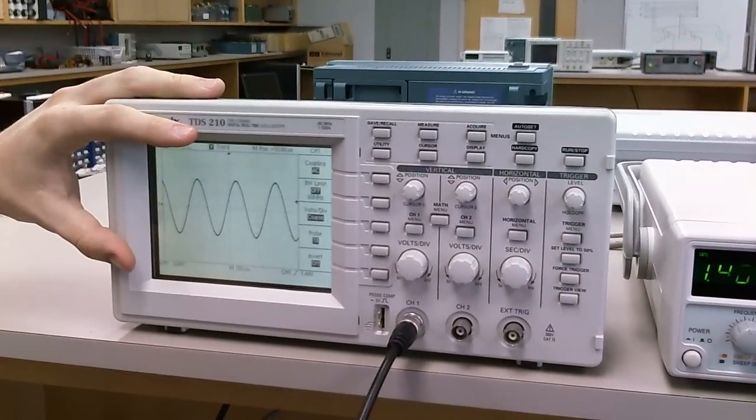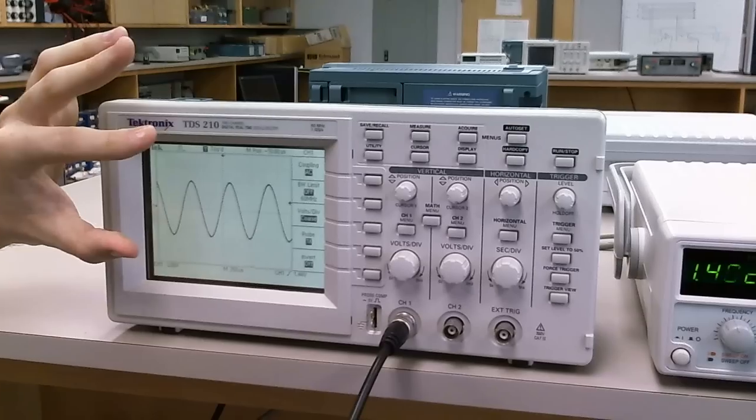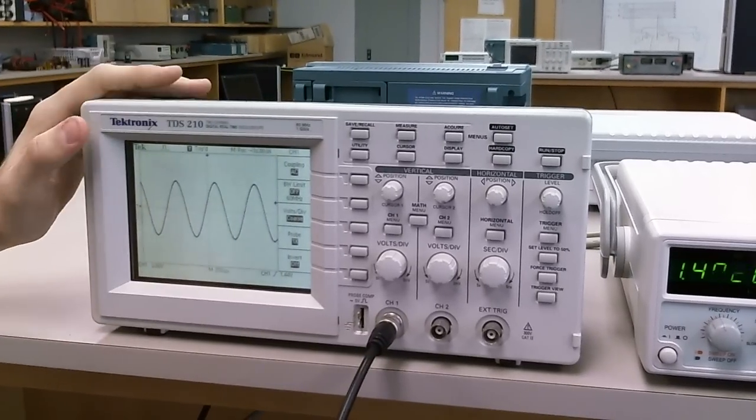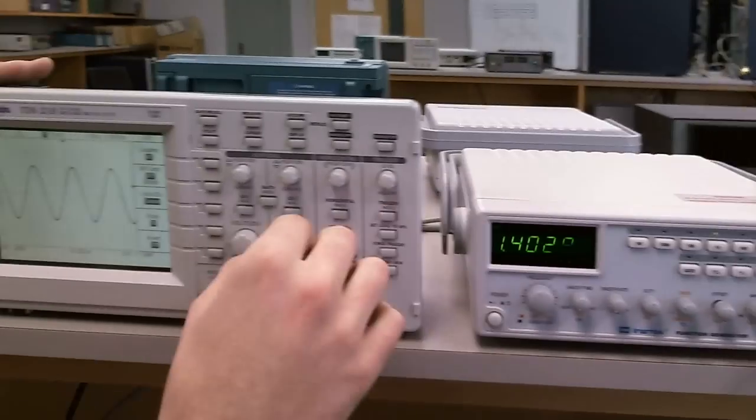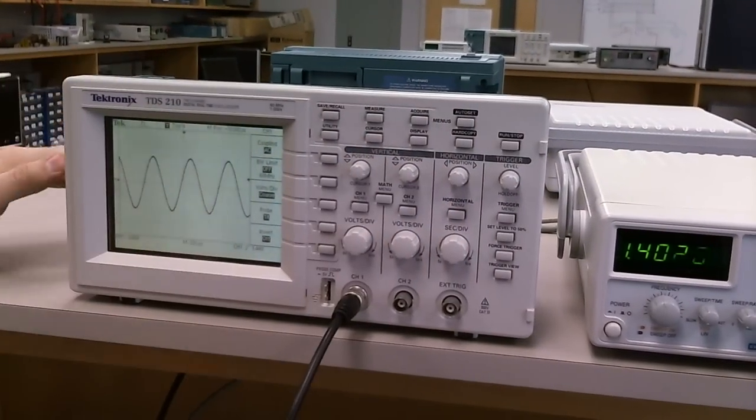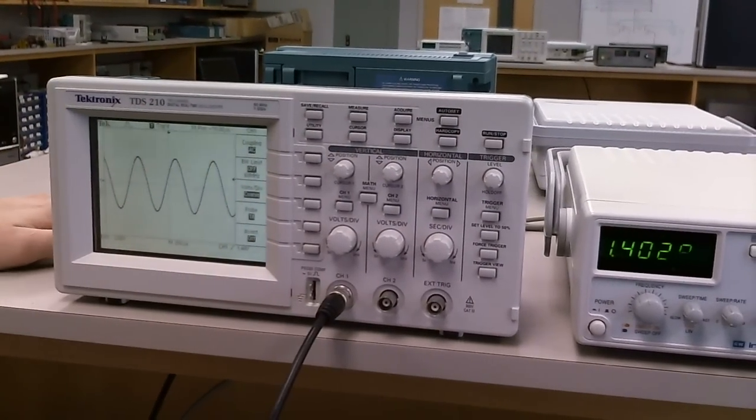So AC coupling is useful when you're measuring only the AC part of the wave. So if I want just the function without any DC current analysis.